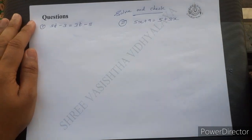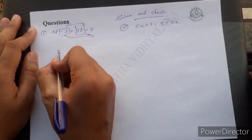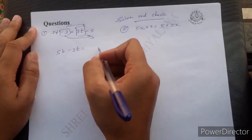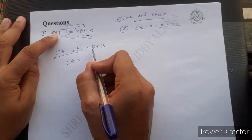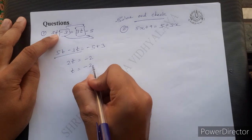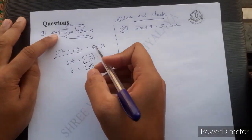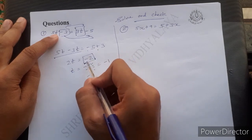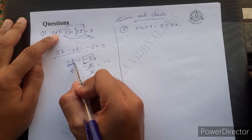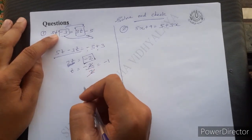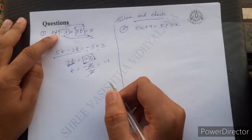Next example: 5t minus 7 equals 3t minus 5. Send 3t to LHS and minus 7 to RHS: 5t minus 3t equals minus 5 plus 7, giving 2t equals 2... Actually: 5t minus 3t equals 2t, and minus 5 plus 3 equals minus 2. So t equals minus 2 divided by 2, and the 2 cancels — the answer is t equals minus 1. The minus sign comes from the larger digit being 5 in the subtraction.